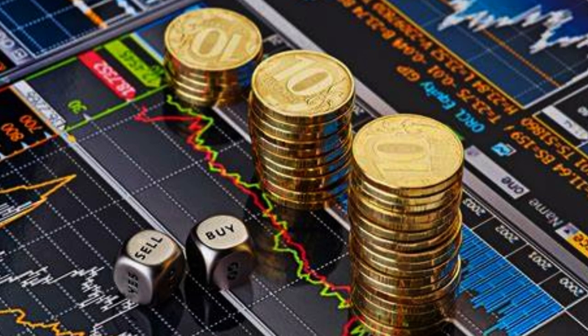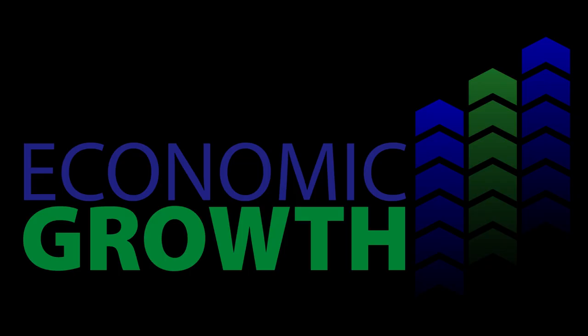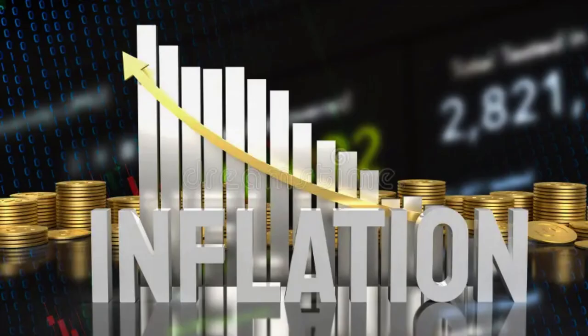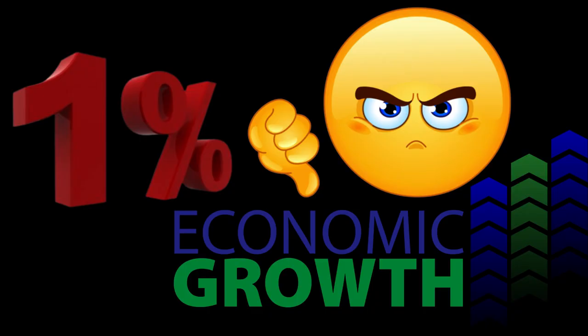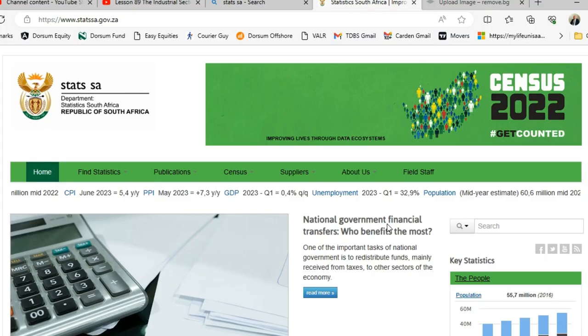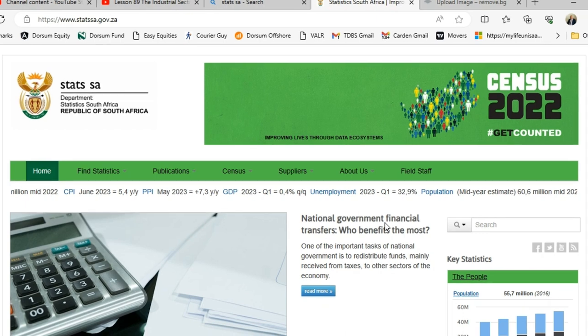Just as a doctor uses certain figures to determine the health of a patient, economists use economic indicators to assess the health of an economy. Certain figures need to be high and certain figures need to be low. For example, the growth rate of a country needs to be high and inflation needs to be low. A 1% growth rate is bad and a 1% inflation rate is good. Let's look at these indicators and see if we need to admit or discharge this patient called South Africa.